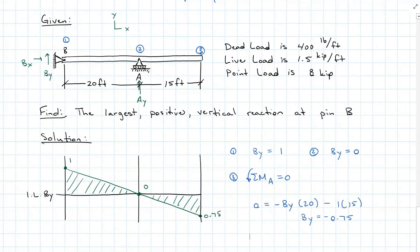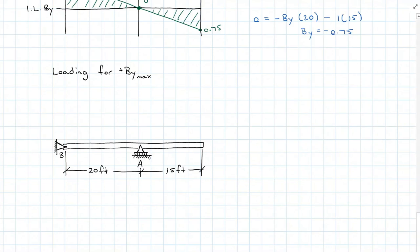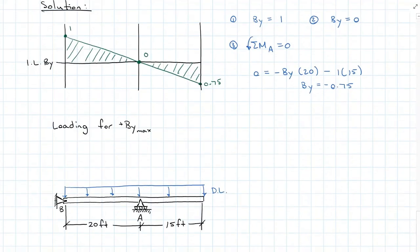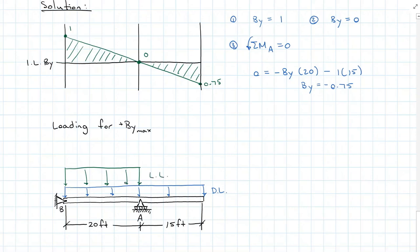Dead load is going to be applied over the entire system no matter what. My live load I can apply anywhere that I want. Since I'm trying to get the maximum positive reaction, I'm only going to apply it over the first 20 feet. The point load — I can apply it anywhere for the worst case scenario. The most positive magnitude influence that the live load is going to have is right over B itself.